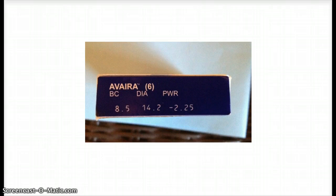There's a BC number, a DIA, a diameter number, and a power number. The BC, the base curvature, and the diameter number, these both have to do with the shape of my eye. They're just numbers that make sure the contact is the right fit for my eye, that it will sit on my eye correctly, sort of the way that you wear a particular shoe size.